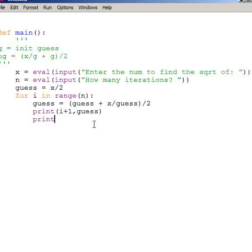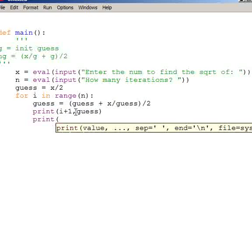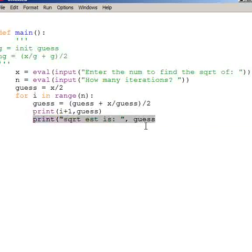And then when I end the loop, I'm going to print out the final answer - that would be essentially the last thing that printed right here. I would print out something like print sqrt estimate is, comma, guess. I'm going to dedent this here.